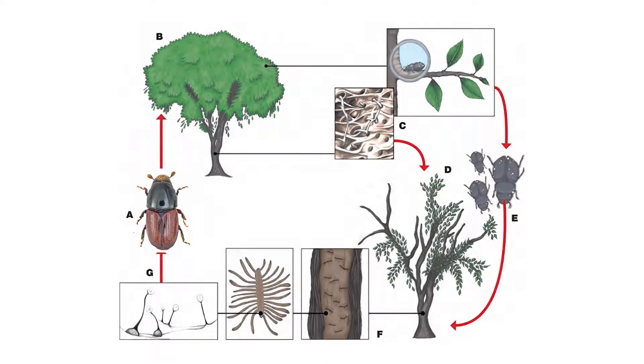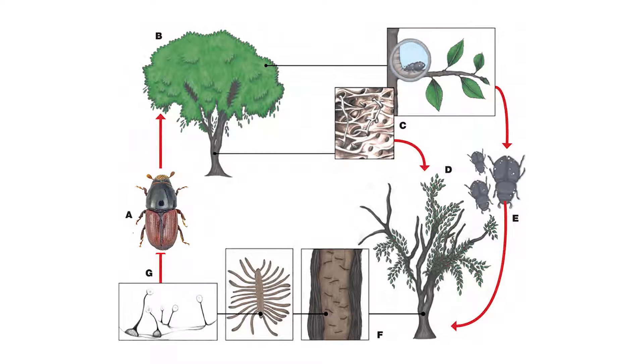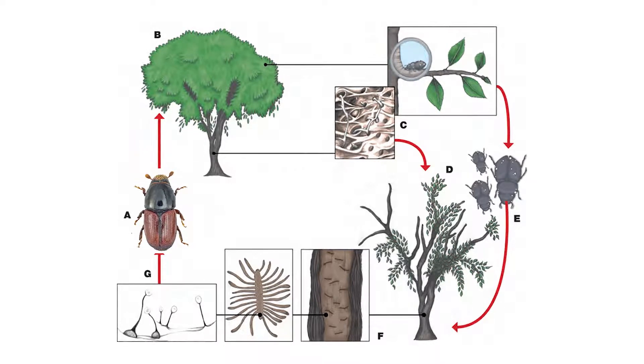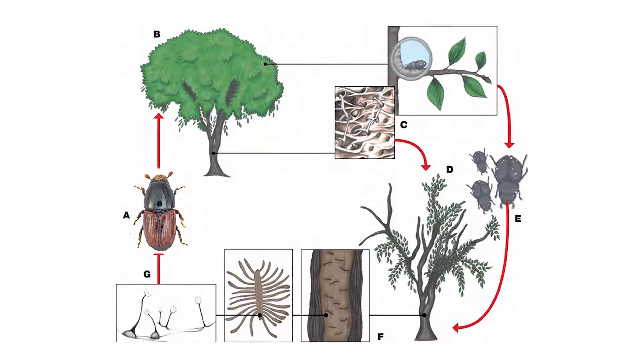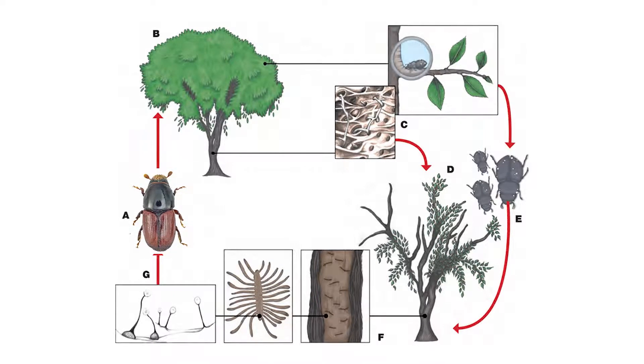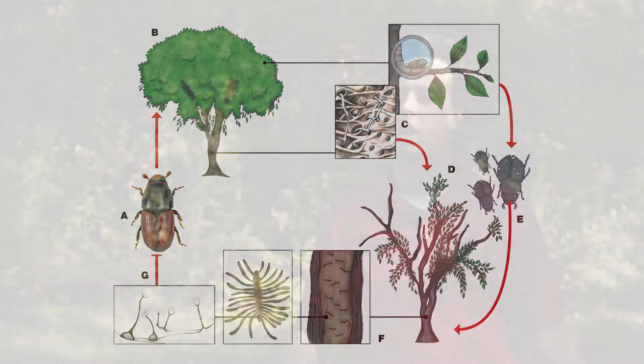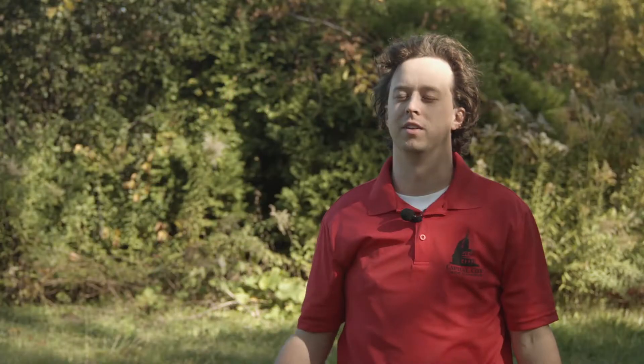Once inside, the fungus is going to cut off circulation, and that's when you're going to start seeing flagging — branches starting to show yellowing leaves and dying back one branch at a time.